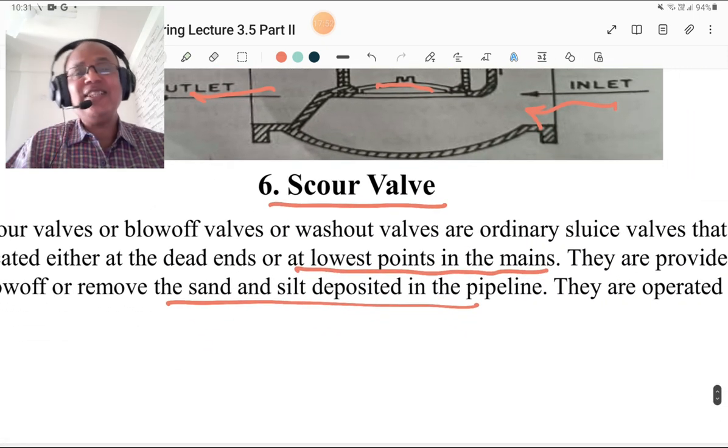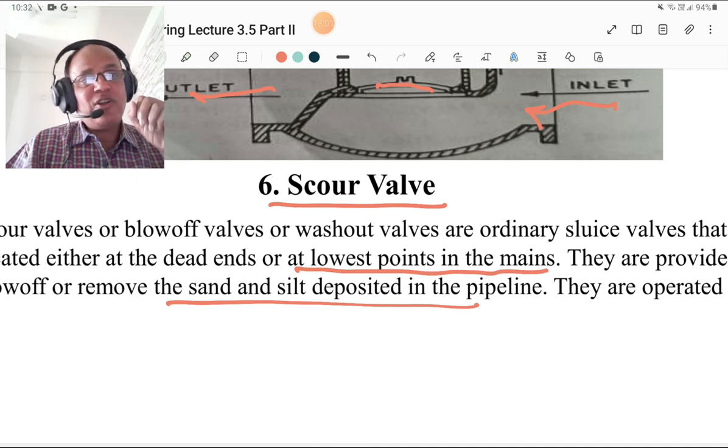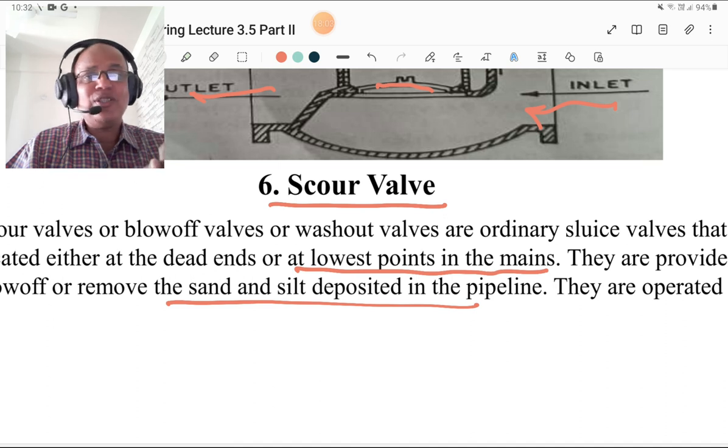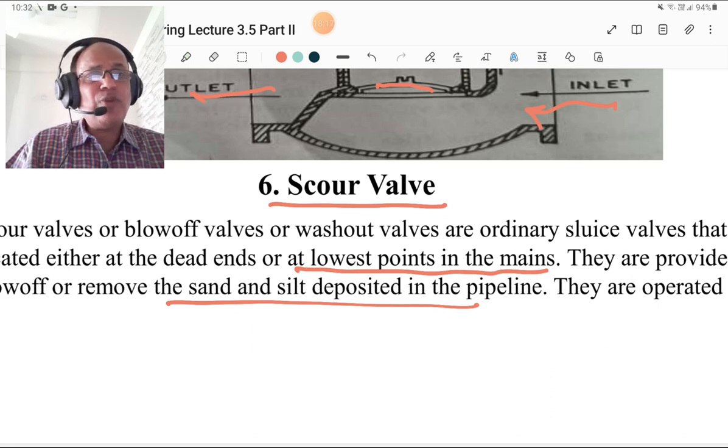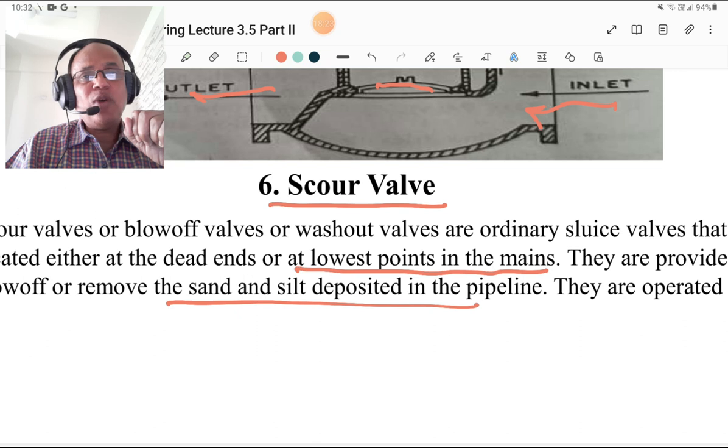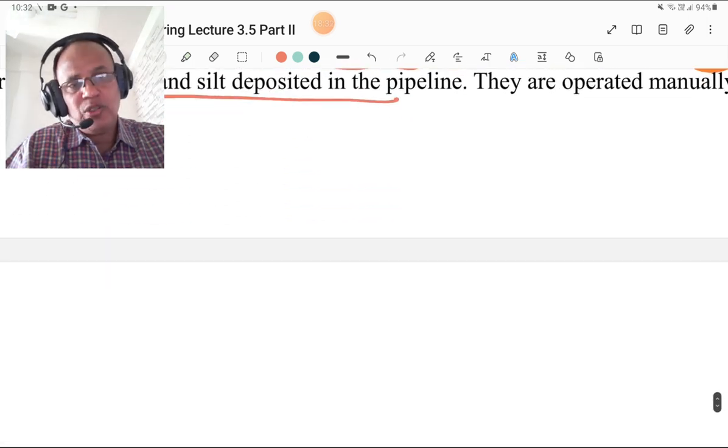Scour valve. Name itself indicates it is used to remove the scour. Scour or sludge material. These valves are also known as blow-off valves or wash-out valves. They are ordinary sluice valves that are located either at the dead ends or at the lowest point of the main. The location is important. Scour valves are located at dead ends because there is formation of scour, or at the lowest point of the main because there is also location where scour forms. They are provided to remove the sand and silt, that is nothing but the scour deposited in the pipeline. They are operated manually. That's the scour valve.